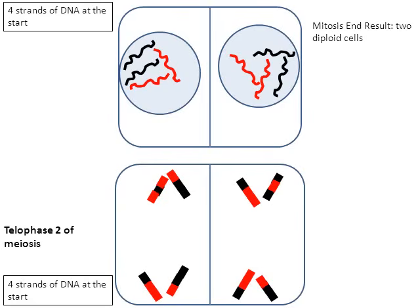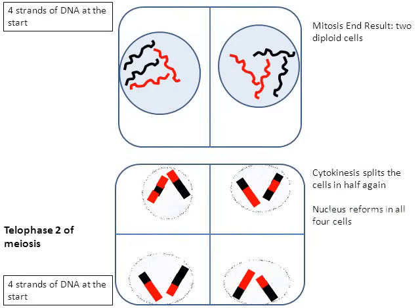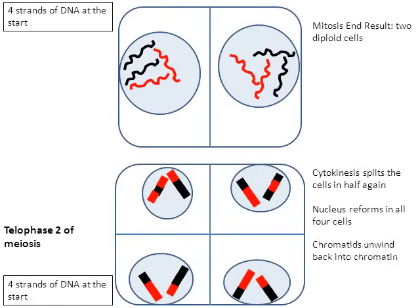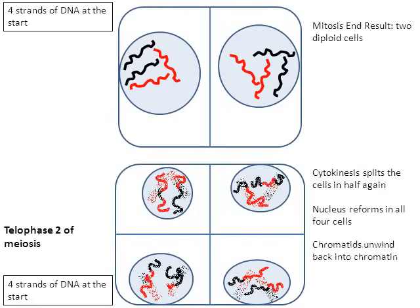Finally moving into telophase number two of meiosis, the cytoplasm is going to split again during cytokinesis, so the two cells have just split into four. The nucleus is going to regrow, but now it's going to regrow in four cells. The last thing is the chromatids are going to unwind back into the linear strands of DNA called chromatin. That's the end of meiosis.